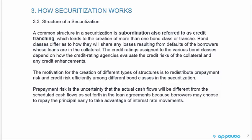The motivation for the creation of different types of structures is to redistribute prepayment risk and credit risk efficiently among different bond classes in the securitization. Prepayment risk is the uncertainty that the actual cash flows will be different from the scheduled cash flows as set forth in the loan agreements, because borrowers may choose to repay the principal early and take advantage of interest rate movements.